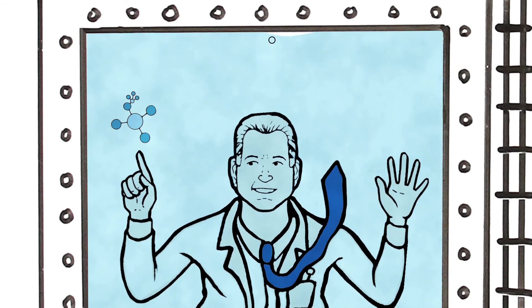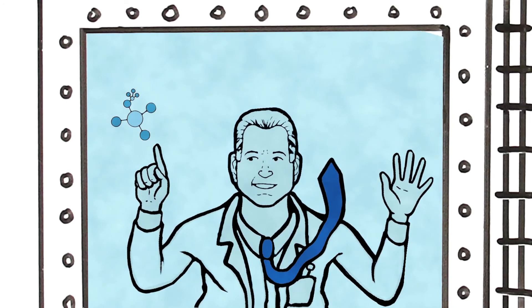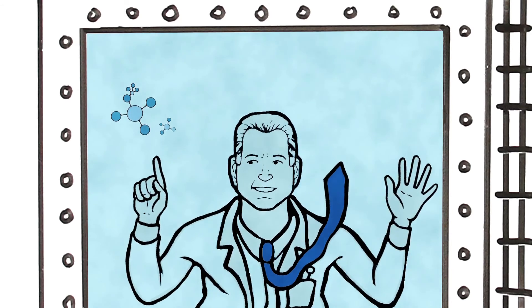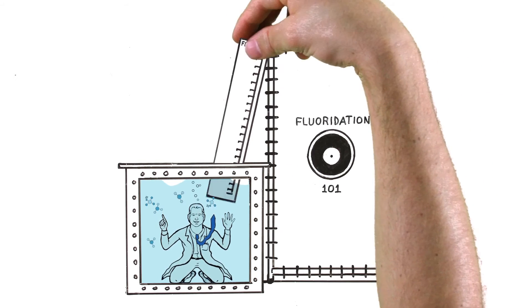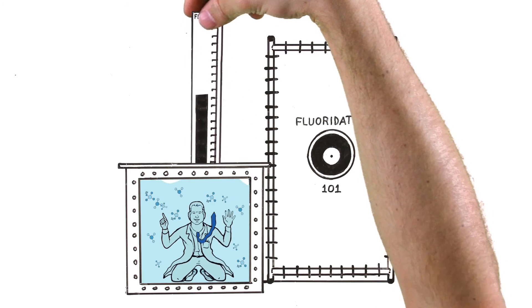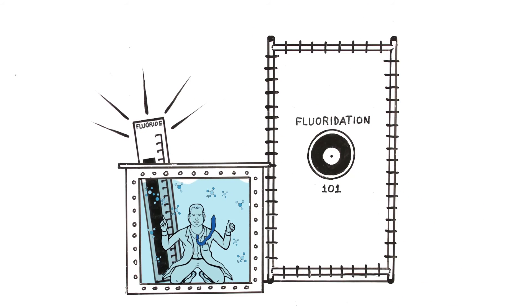Fluoride exists naturally in nearly all water supplies, but usually at levels too low to prevent tooth decay. Fluoridation is the practice of adjusting the fluoride concentration to a level that will reduce tooth decay and promote oral health.